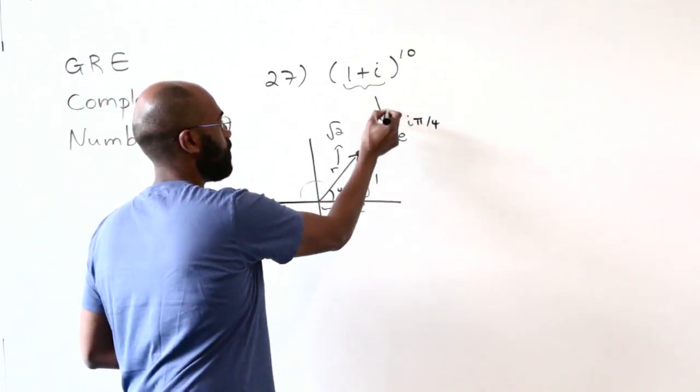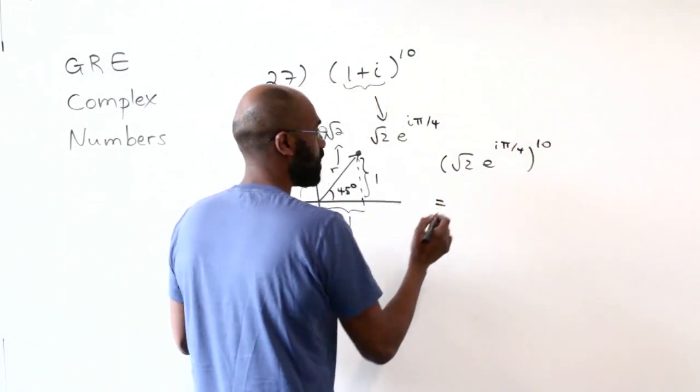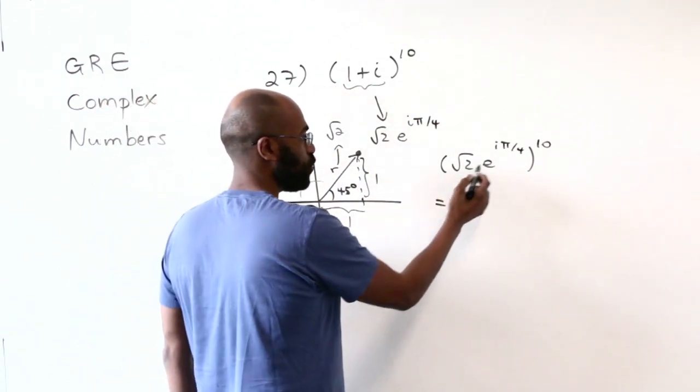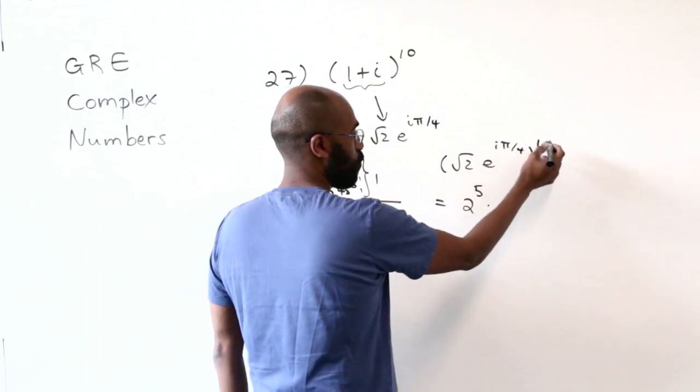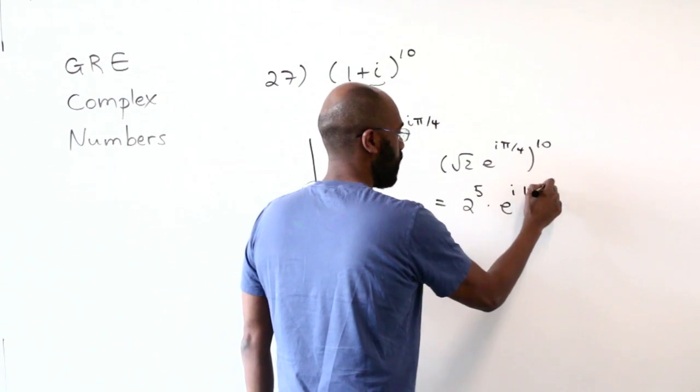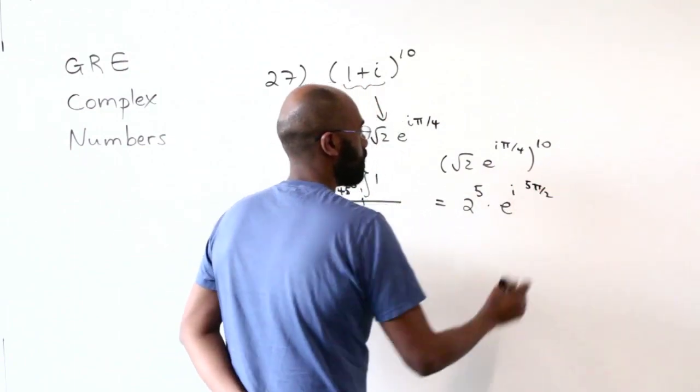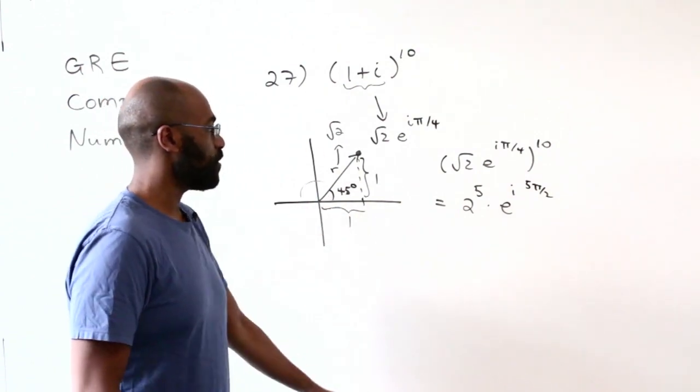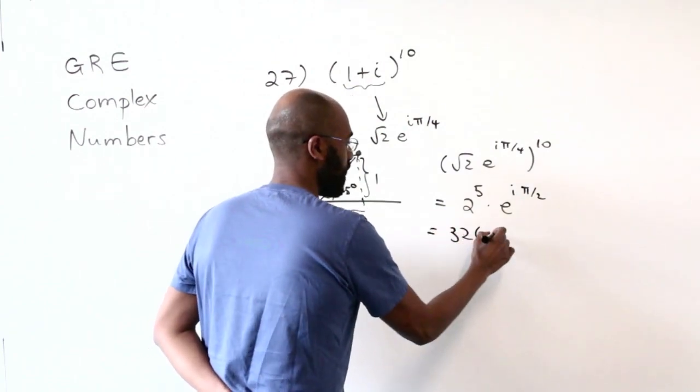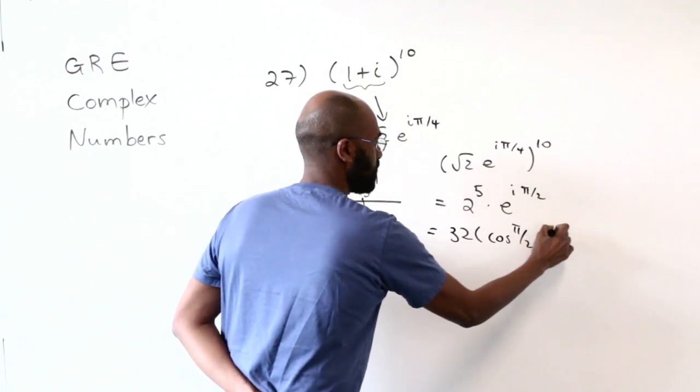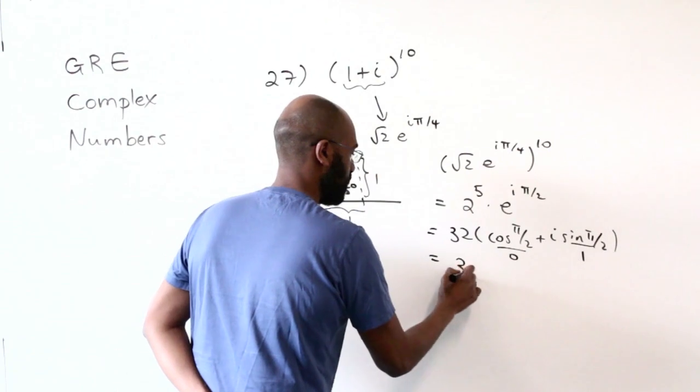So here is the complex number that we're considering. And now we want to compute the 10th power of it. So I take root 2 e to the i pi over 4 and raise it to the 10. And this can be done much simpler. We'll have root 2 to the 10. This is 2 to the half, so root 2 to the 10 is 2 to the 5th times e to the i pi over 4 to the 10. We'll multiply this exponent by 10 to get i times 10 pi over 4. 10 pi over 4 is the same as 5 pi over 2. And we can always move by 2 pi because we're considering the angle here, and so we can reduce this by 2 pi to say that it's the same as i pi over 2. And so this is 32 times cosine pi over 2 plus i times sine pi over 2. Cosine pi over 2 is 0 and sine pi over 2 is 1. So this gives us an answer of 32i.